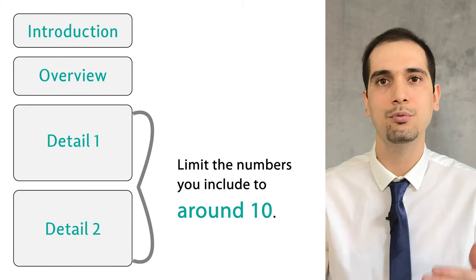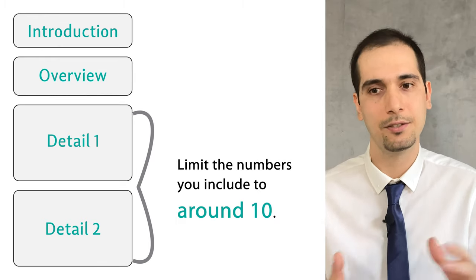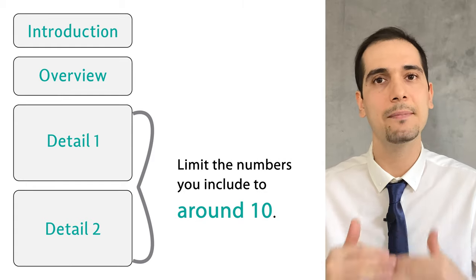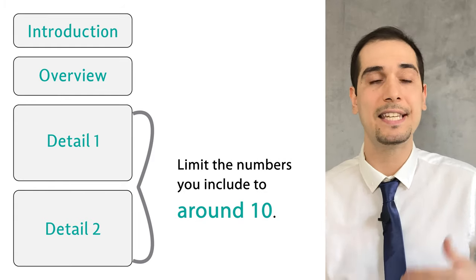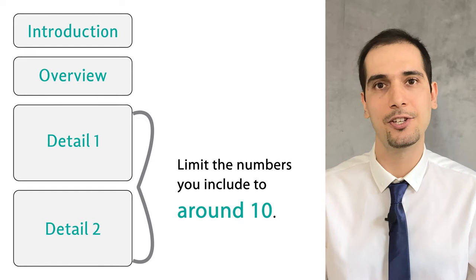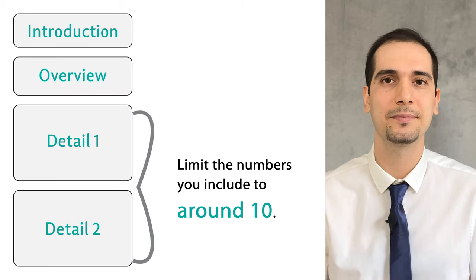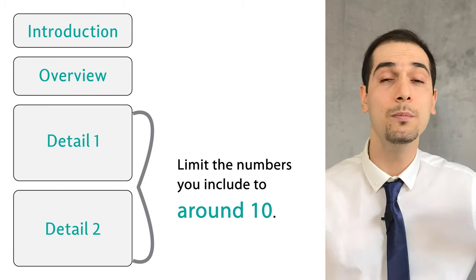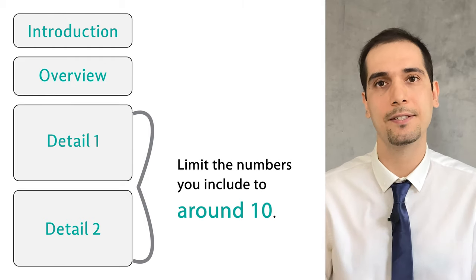Sometimes there are so many numbers in a chart — imagine a line graph with many data points. Try to limit the number of figures you write in the detailed paragraphs to a maximum of 10. Do not include more than 10 numbers. If you do, it means you have not selected the main information and not summarized properly. Don't include too many numbers — 20 numbers in the body paragraphs takes too long and signals to the examiner that you have not understood the chart carefully and have not selected and summarized the main features.